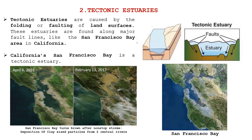The Chesapeake Bay was formed at the end of the last ice age. Massive glaciers retreated leaving a carved-out landscape behind. The Atlantic Ocean rushed in to fill the wide coastal plain around the Susquehanna River, creating a large estuary known as a Ria, or drowned river mouth. The second type is the tectonic estuary, caused by folding or faulting of land surfaces. These are found along major fault lines, like the San Francisco Bay area in California, which is a tectonic estuary.